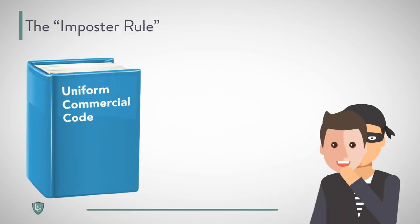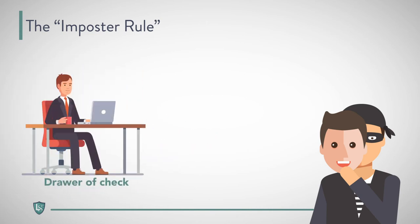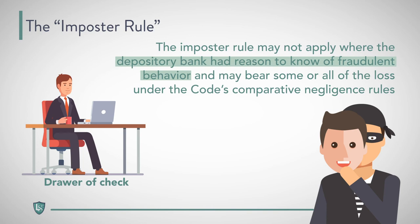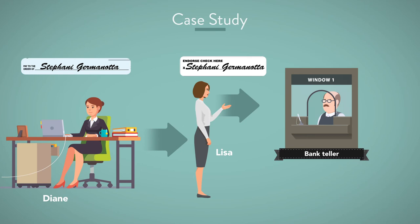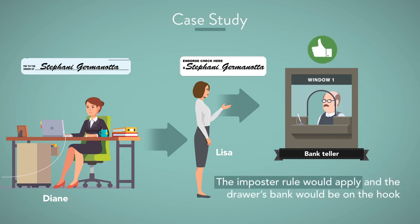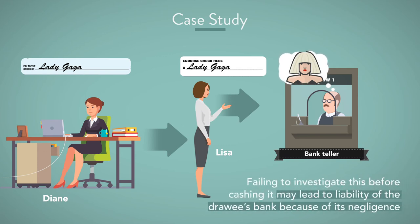The rationale for the Imposter Rule is that the Code tries to assign any loss to the person best able to avoid it — here, the drawer is in the best position to know the identity of the imposter. The rule may not apply where the depository bank had reason to know of fraudulent behavior and may bear some or all of the loss under the Code's comparative negligence rules. For example, Diane writes a check to Lisa, who deposits it. The check is payable to Stephanie Germanota and endorsed with that name, appearing to be a normal transaction, so the bank processes it without incident — the Imposter Rule would apply and the drawer's bank would be on the hook. However, if Lisa deposited a check payable to and endorsed by Lady Gaga, which is Germanota's commonly recognizable stage name, the teller should be suspicious, and failing to investigate may lead to liability of the drawer's bank due to its negligence.